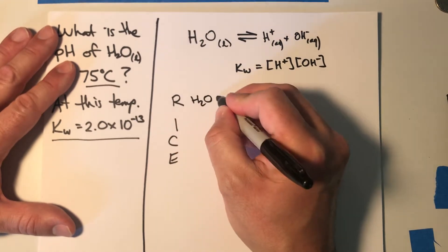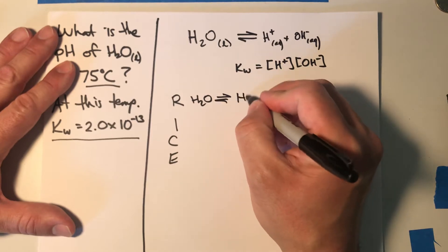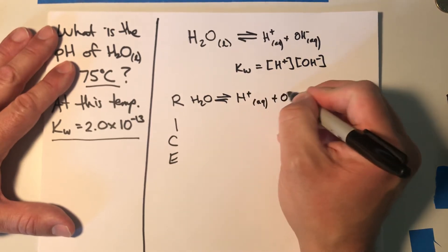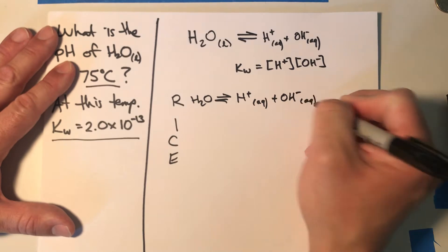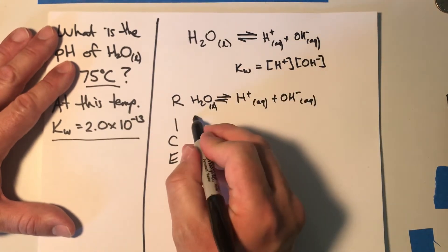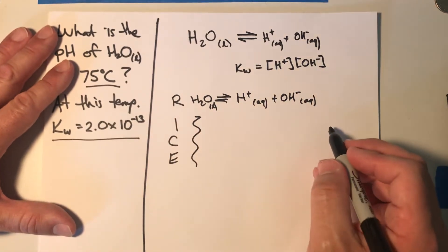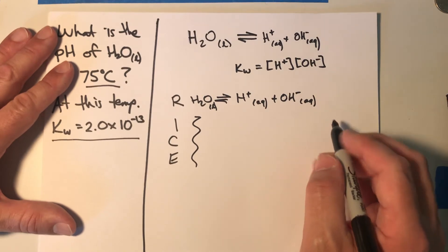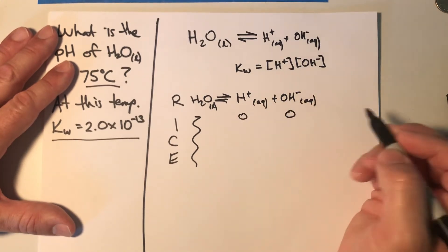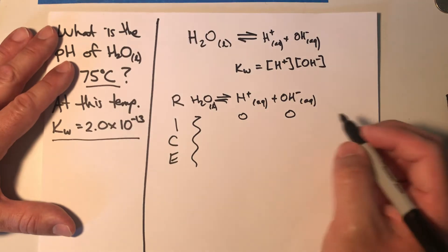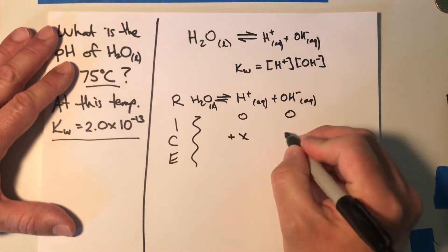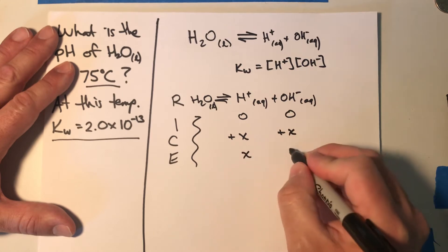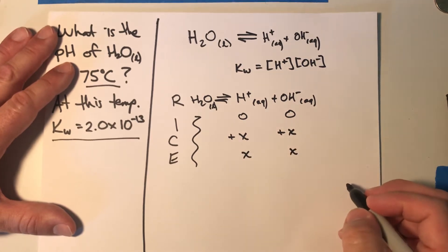We know the reaction equation, and since the liquid doesn't change concentration we're going to ignore that — reminding ourselves with a little squiggle. There's no H+ or OH− associated initially, but to reach equilibrium there will be. So that's our rice table.